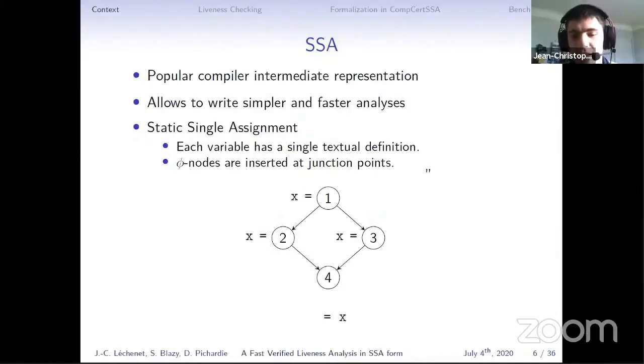Let me give a few words about SSA. It's a popular compiler intermediate representation that allows to write simpler and faster analysis. SSA means static single assignment. That means that each variable is defined only once in the program. So if we have a program that is not in SSA, like the program below, where we have three assignments to x, we turn it into SSA by renaming the variable into x0, x1, x2.